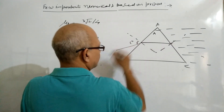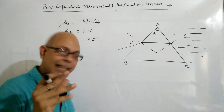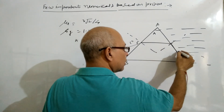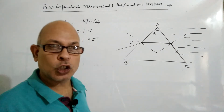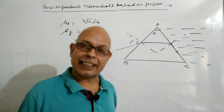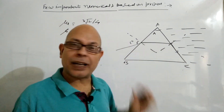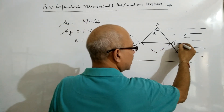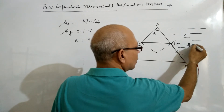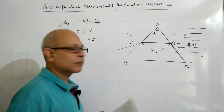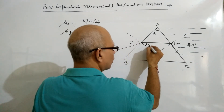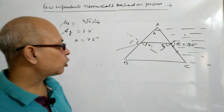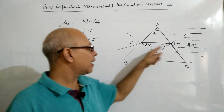This angle is I. When the ray totally reflects at the surface, this angle is the emergent angle. This angle is R1 and this is R2.